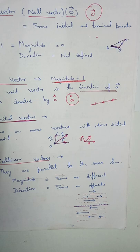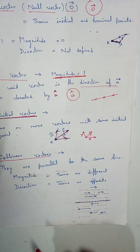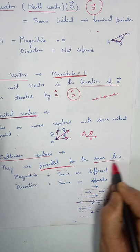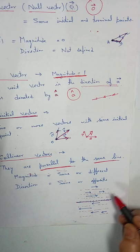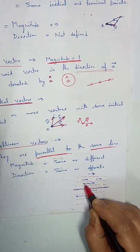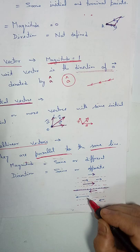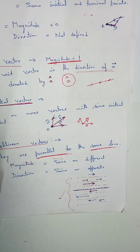Next are collinear vectors — they are parallel to the same line. The only condition is that they are parallel to the same line. Magnitude can be same or different, direction can be same or different — it doesn't matter. As shown, vectors in this direction and vectors in the opposite direction are all collinear vectors.